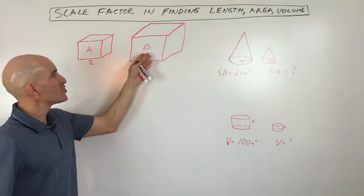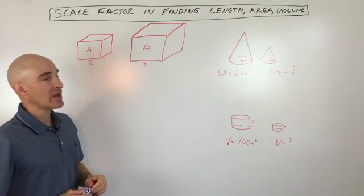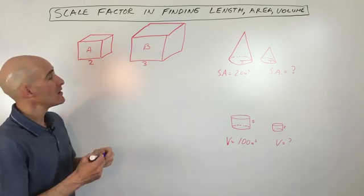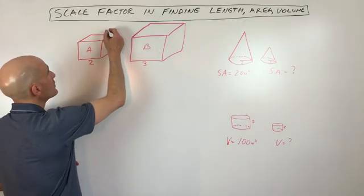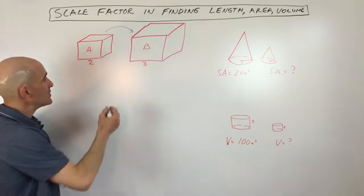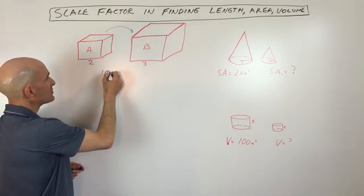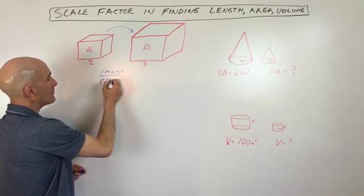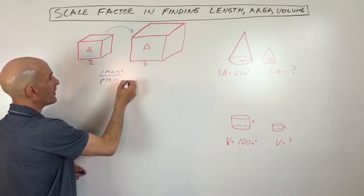So say, for example, that these two cubes are similar, and we want to find the scale factor from figure A to figure B. What you want to do when you find the scale factor from A to B is you actually want to take the image, which is the new one, divided by the pre-image. That's the old one, the original one.